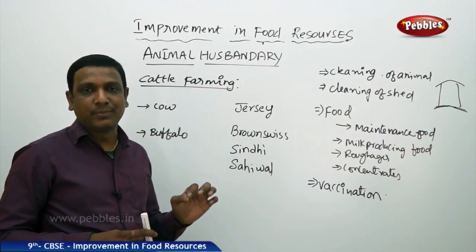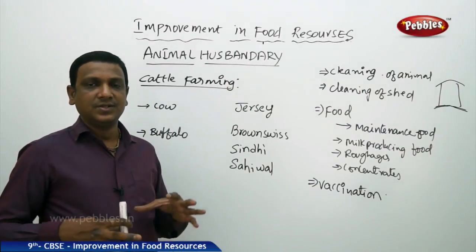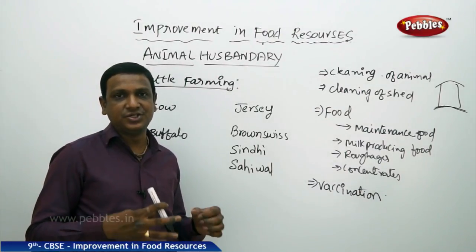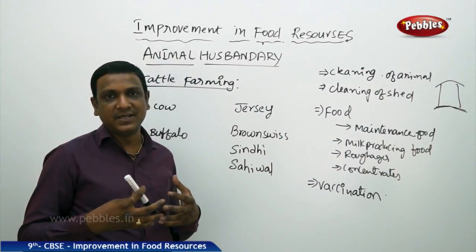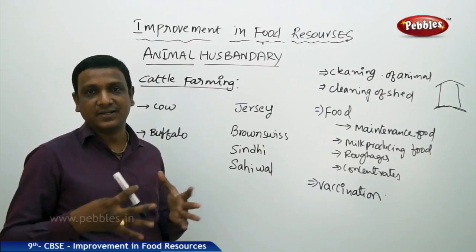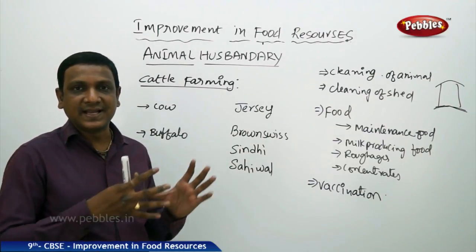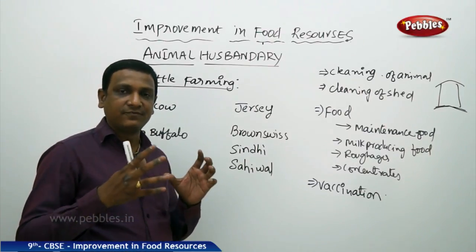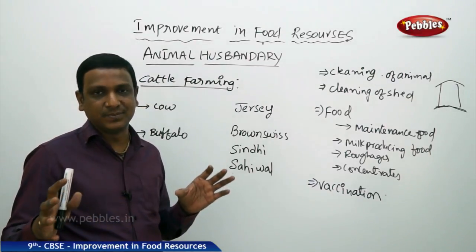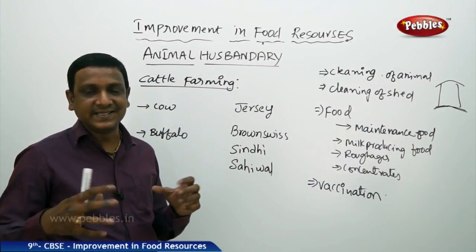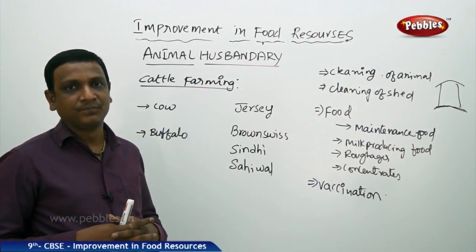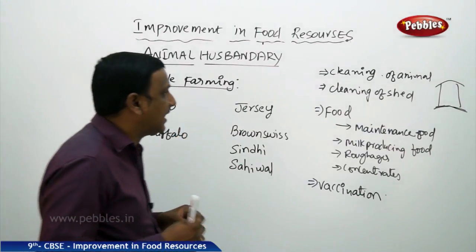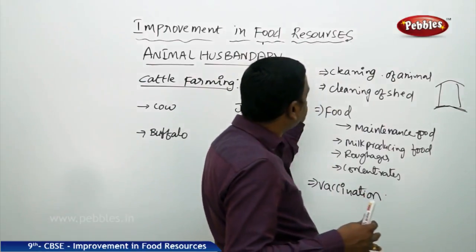Milk production in cows or buffaloes begins during the lactation period, which starts after the animal delivers a baby. Different animals have different lactation periods. Farmers must select breeds that have a good lactation period — meaning how many days the animal gives milk after giving birth. Cross-breeds or hybrids with good lactation periods can be selected for better milk yield.